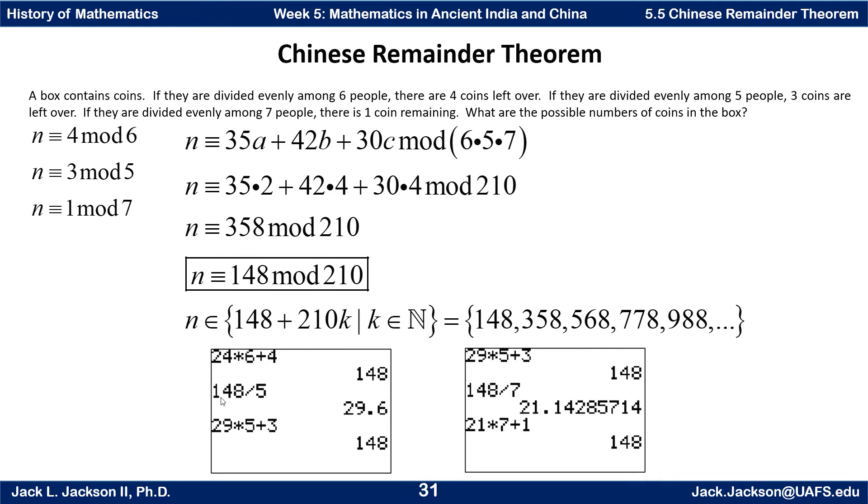We could just double check to see that 148 actually works. So 24 times 6 plus 4 is 148. So if I divide it by 6, there's 4 coins left over. 148 divided by 5, I got 29 point something. So 29 times 5 plus 3 more will be 148. Yes, it checks. So if I divide by 5, I get a remainder of 3. 148 divided by 7 is 21 point something. So 21 times 7 plus just one more will be 148. Sure enough, that checks as well.